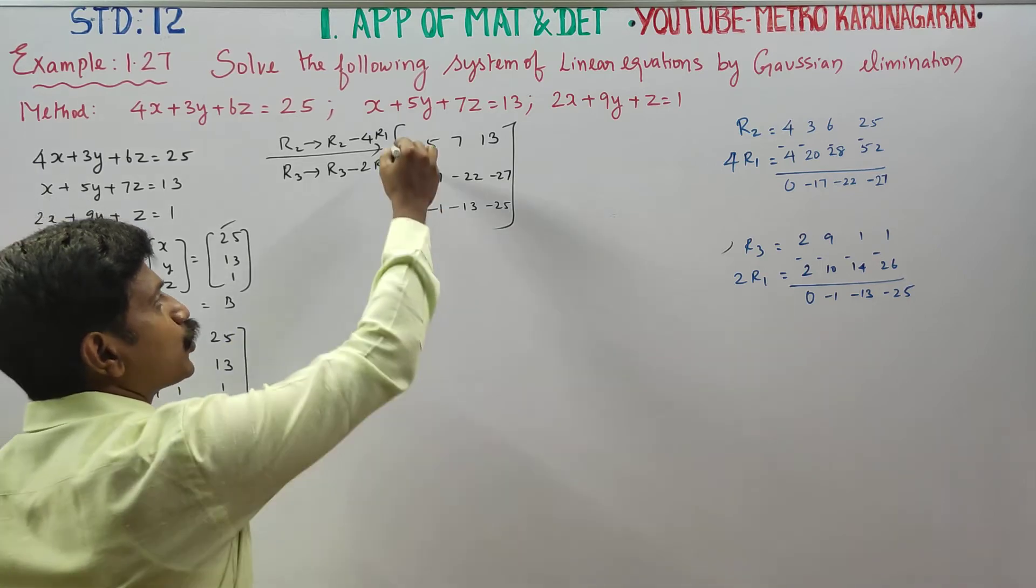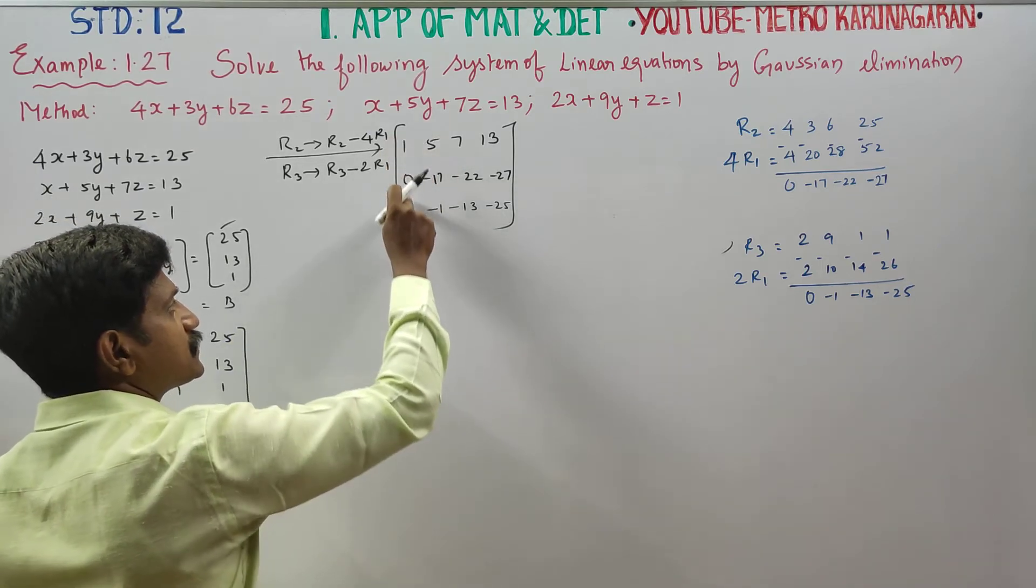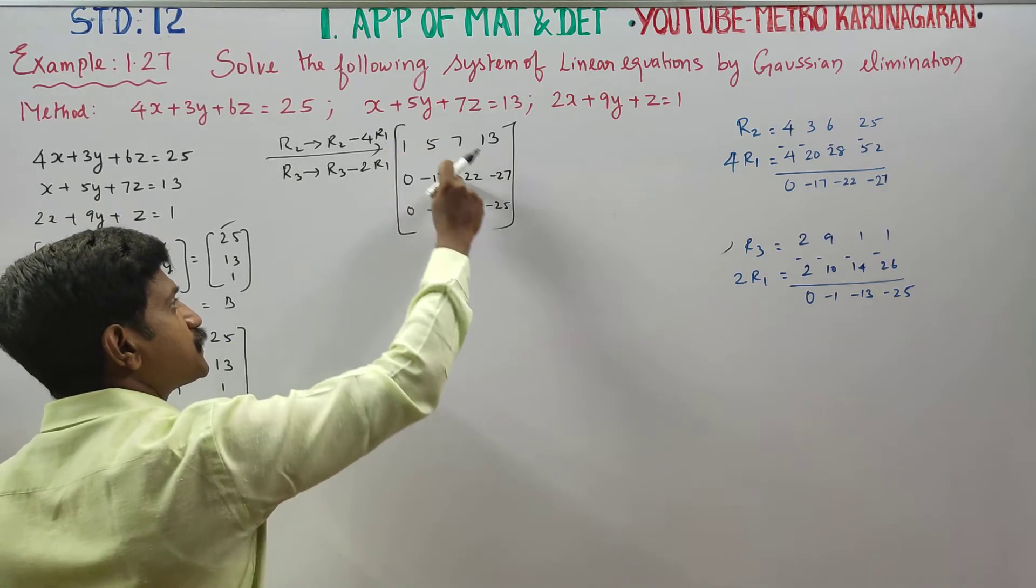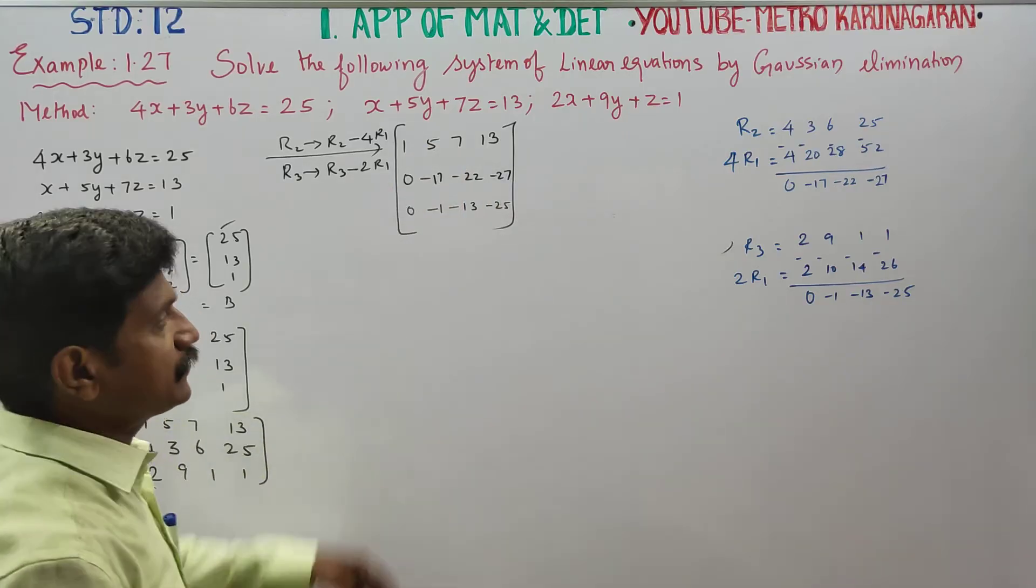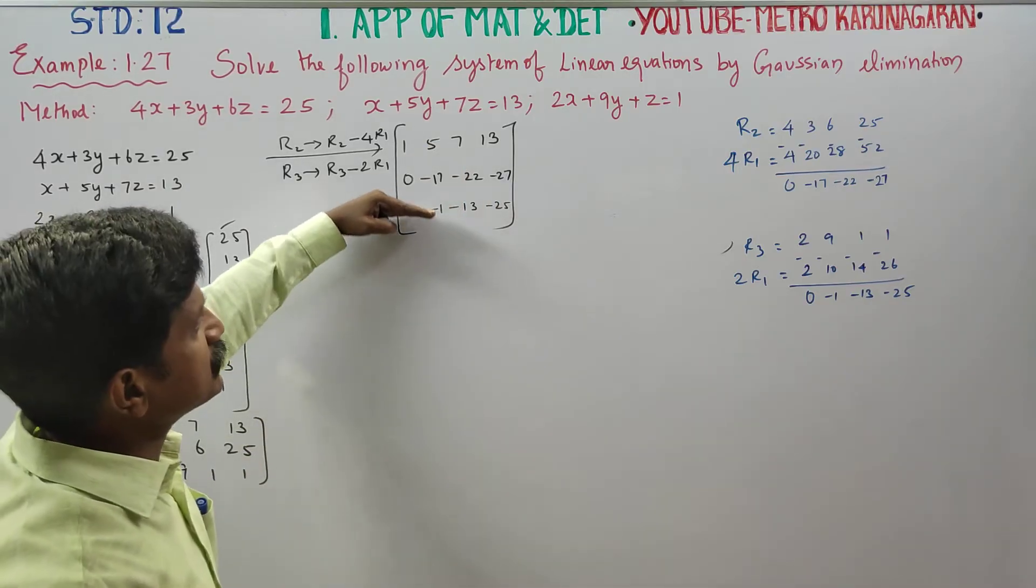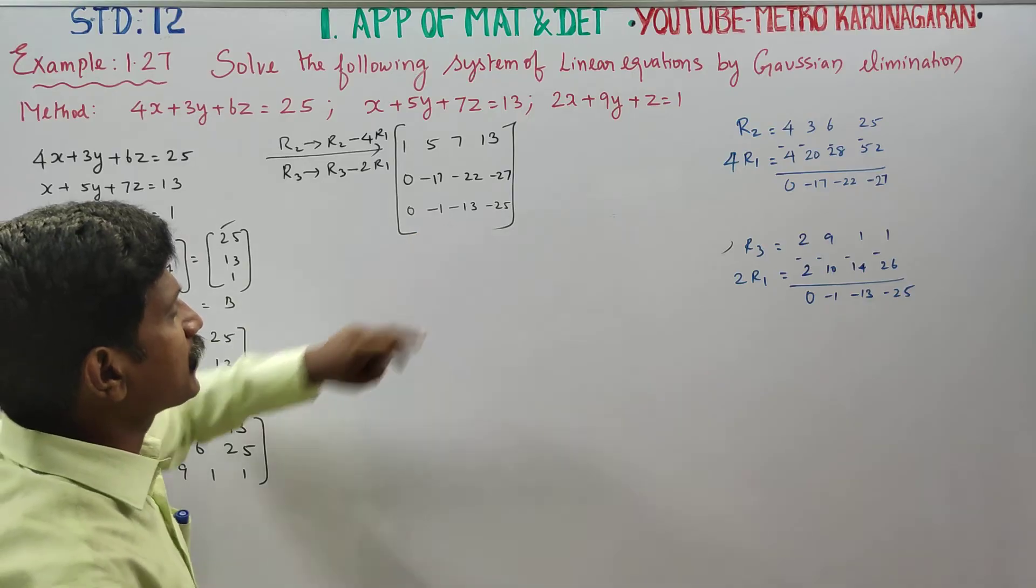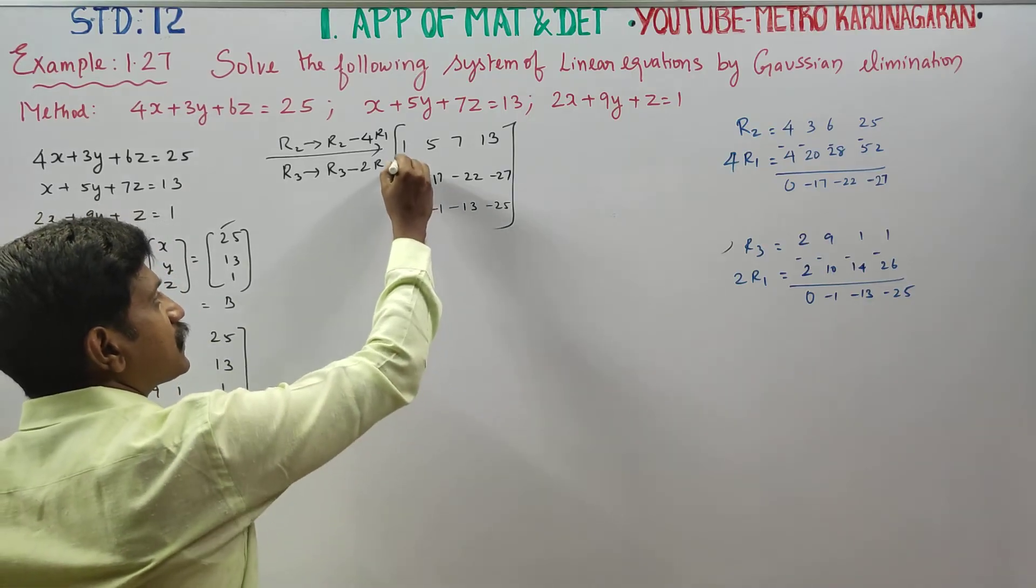The last stage, this is 0, this is 0. Then you will have row echelon form: this is row echelon form with the principal diagonal and the maximum zeros will come.